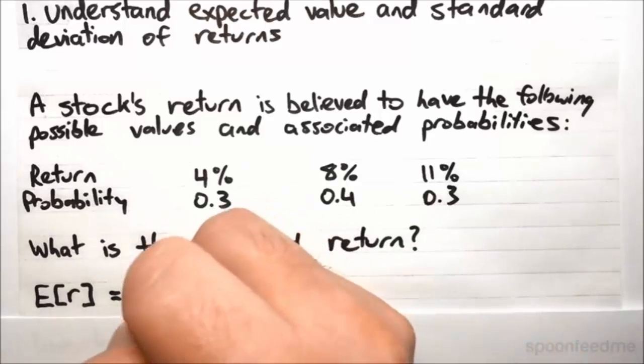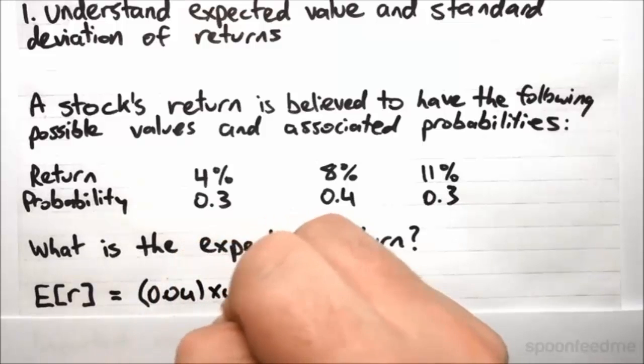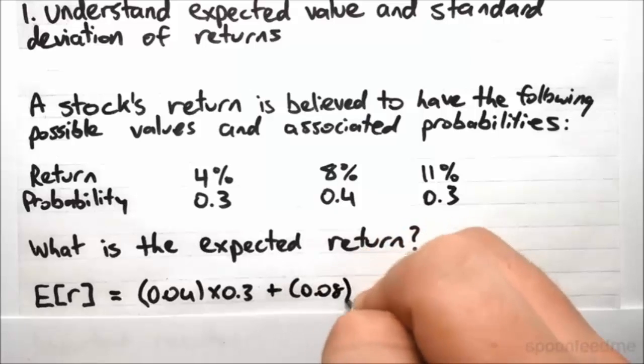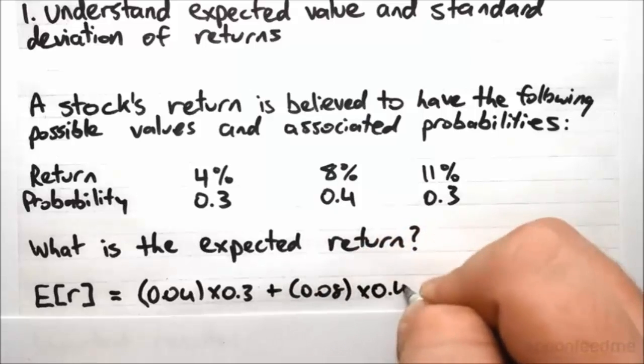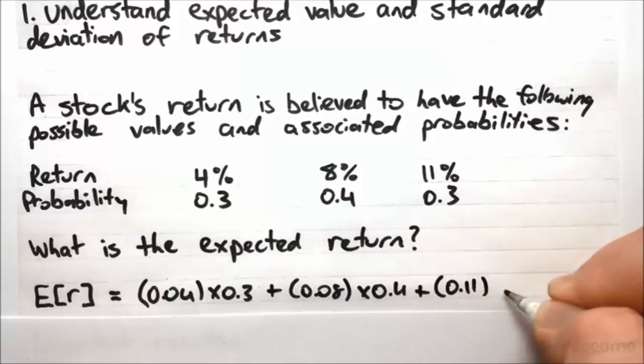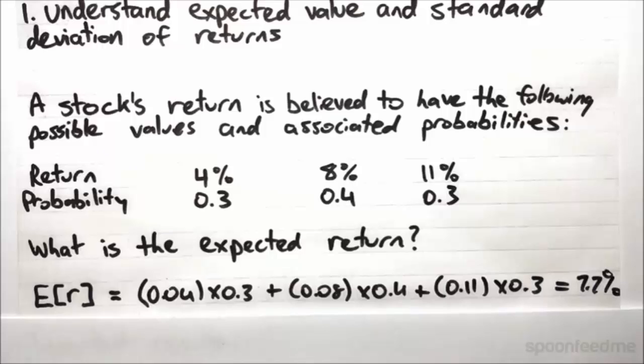we would say that the expected return is 4% times the probability 0.3, plus 8% times 0.4, plus 11% times 0.3. And that just comes out to be 7.7%. So it's a really straightforward concept.